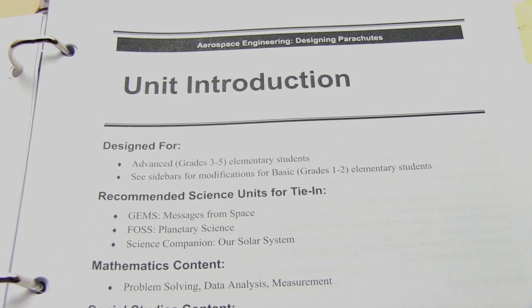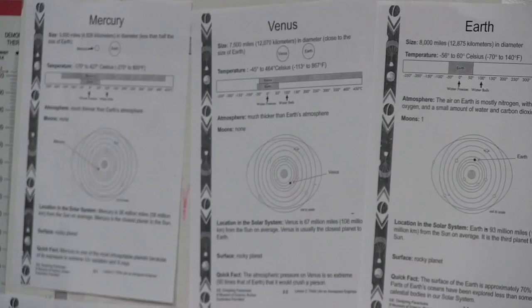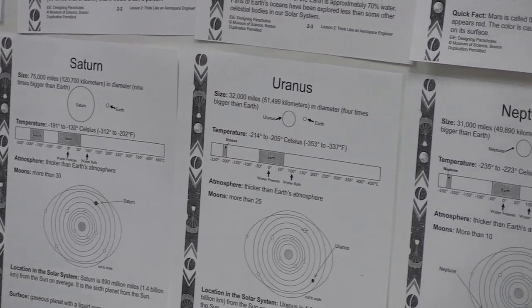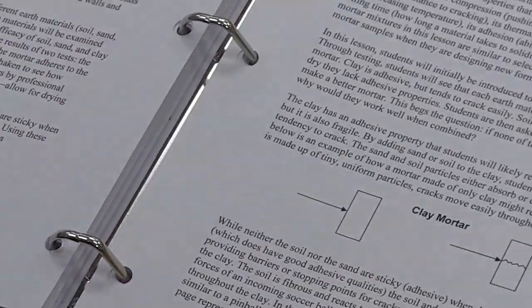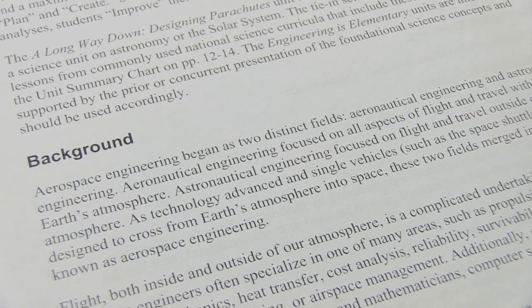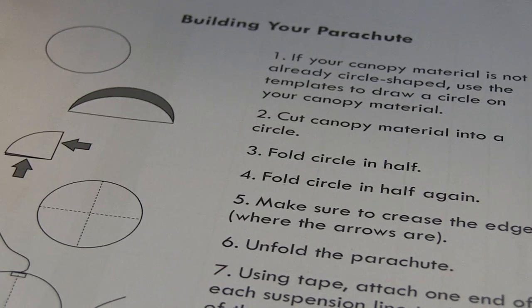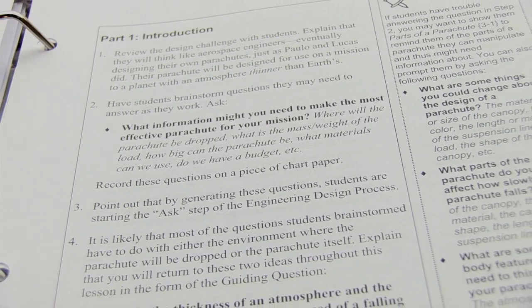Knowing the basic science behind the technologies your students are designing can help you focus your questions. EIE units are designed to be taught in conjunction with their relevant science topic. For example, the Designing Parachutes unit can be taught along with a science unit on the solar system. Every EIE teacher guide includes information on the relevant science topic as well as on the technologies students will be designing, and also includes prompts and sample questions to help you.